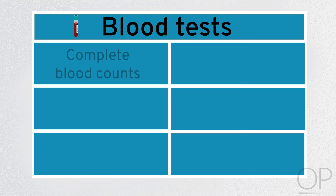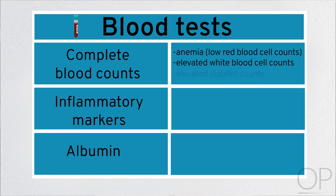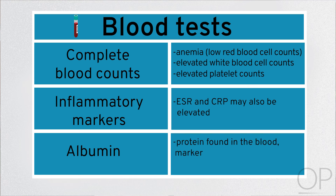Blood tests. Complete blood counts, inflammatory markers, and albumin are the most important blood tests in an IBD evaluation. Complete blood count may demonstrate anemia, or low red blood cell counts, elevated white blood cell counts, and elevated platelet counts. Systemic inflammatory markers, known as ESR and CRP, may also be elevated. Albumin, which is a protein found in the blood, serves as a marker of nutritional status and may be low in patients with IBD. It is important to note that normal blood work does not exclude the diagnosis of IBD, especially in mild cases.